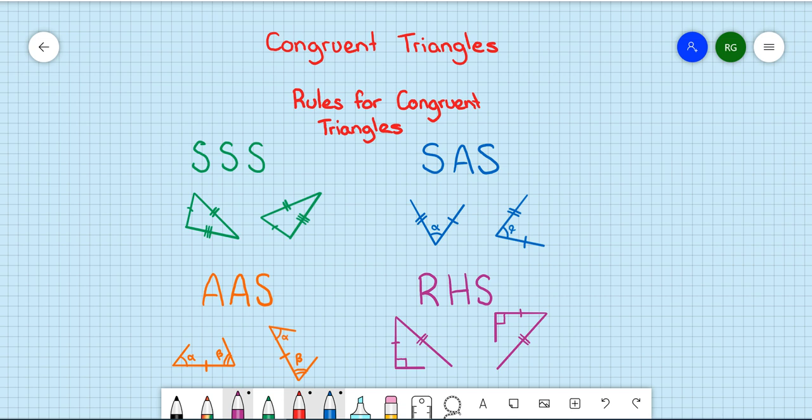There are four golden rules regarding congruent triangles. Each of them has an abbreviated term and you can probably see them on the screen now. They are color coded for this explanation.